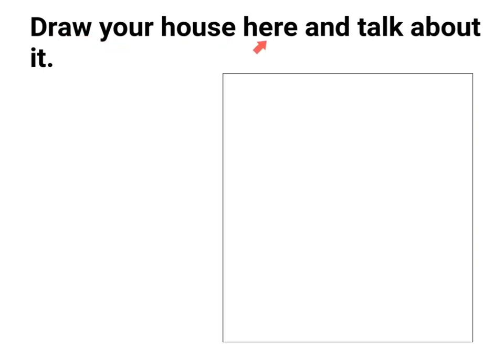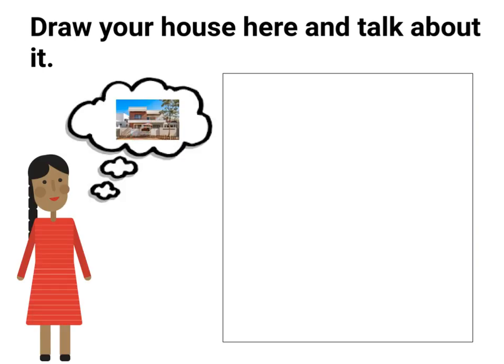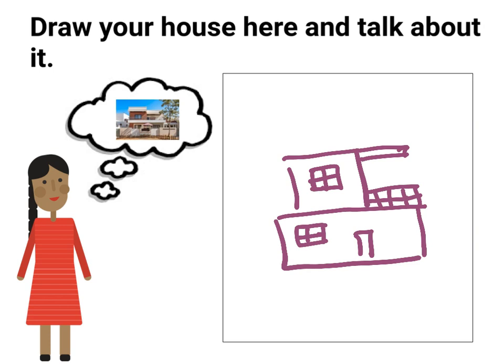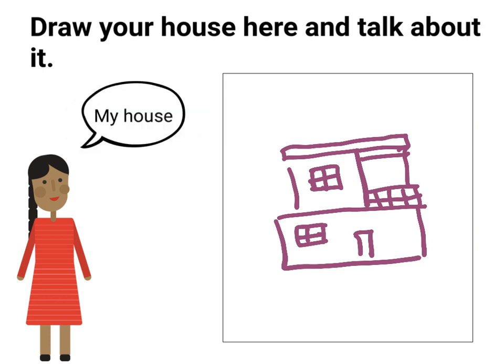The next question is: draw your house and talk about it. My house has a ground floor with a door and a big window, and a first floor with a big window and a covered terrace. A house is a place where we live. I live in Jaipur. My house is a two-storied bungalow, built by my father. There are four members in my family — my father, mother, my brother, and me — and we all live together.